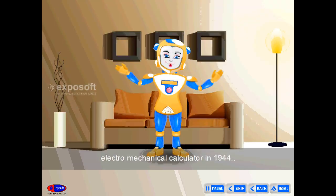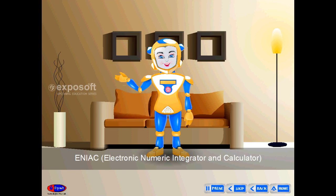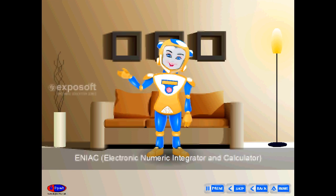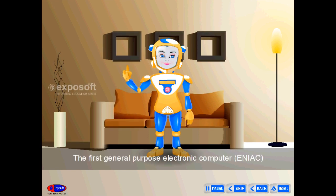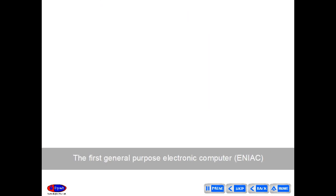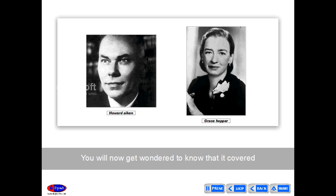ENIAC, the Electronic Numeric Integrator and Calculator, was the first general-purpose electronic computer, designed by John Mauchly and J. Presper Eckert in 1946. It covered 1,800 square feet of floor space and weighed 30 tons.